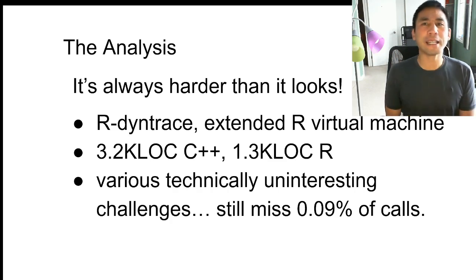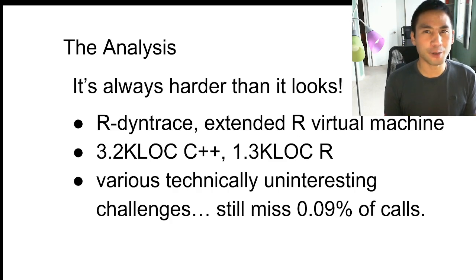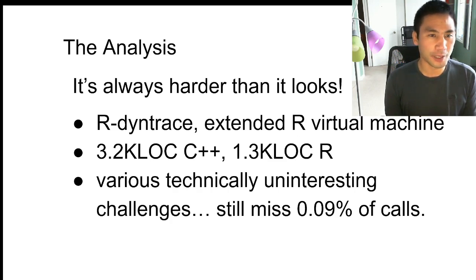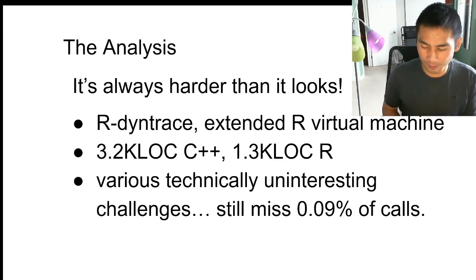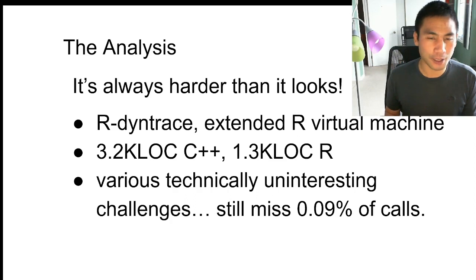For dynamic analysis, conceptually it's simple: instrument the R virtual machine to capture what's happening. They built rdintrace, an extended R VM implemented as an R module with 3,000 lines of C++ and 1,000 lines of R code. They miss 0.09% of calls, which is not considered significant — there's nothing special about those calls and there's plenty in the captured calls to draw good conclusions.